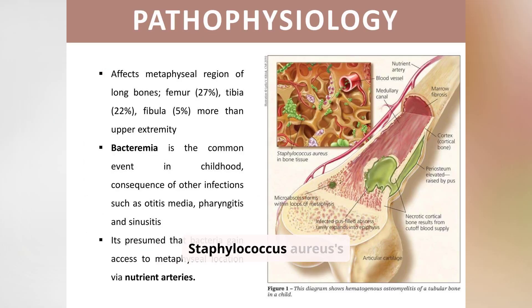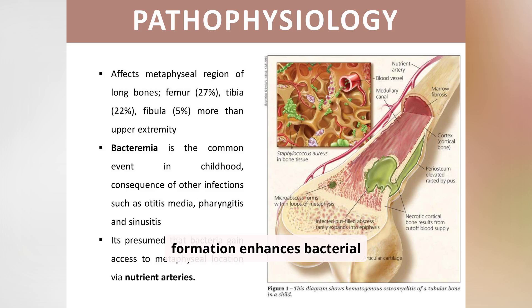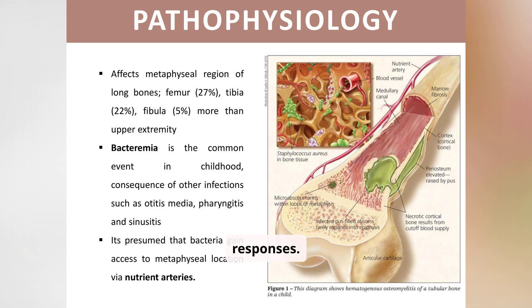Staphylococcus aureus' surface antigens help it adhere to bone collagen, while glycocalyx formation enhances bacterial binding, complicating treatment by resisting local immune responses.